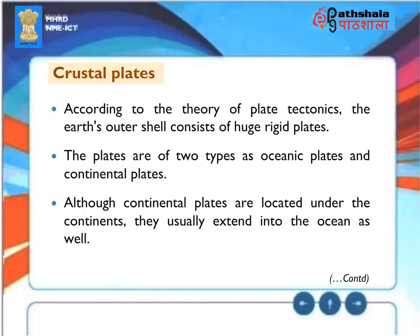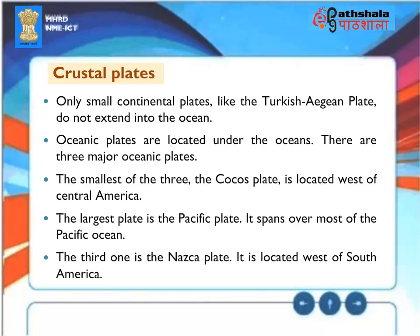Crustal Plate: According to the theory of plate tectonics, the Earth's outer shell consists of huge, rigid plates — oceanic plates and continental plates. Although continental plates are located under the continents, they usually extend into the ocean as well. Only small continental plates, like the Turkish-Aegean plate, do not extend into the ocean. There are three major oceanic plates: the smallest, the Cocos Plate, located west of Central America; the largest, the Pacific Plate, spanning most of the Pacific Ocean; and the Nazca Plate, located west of South America.